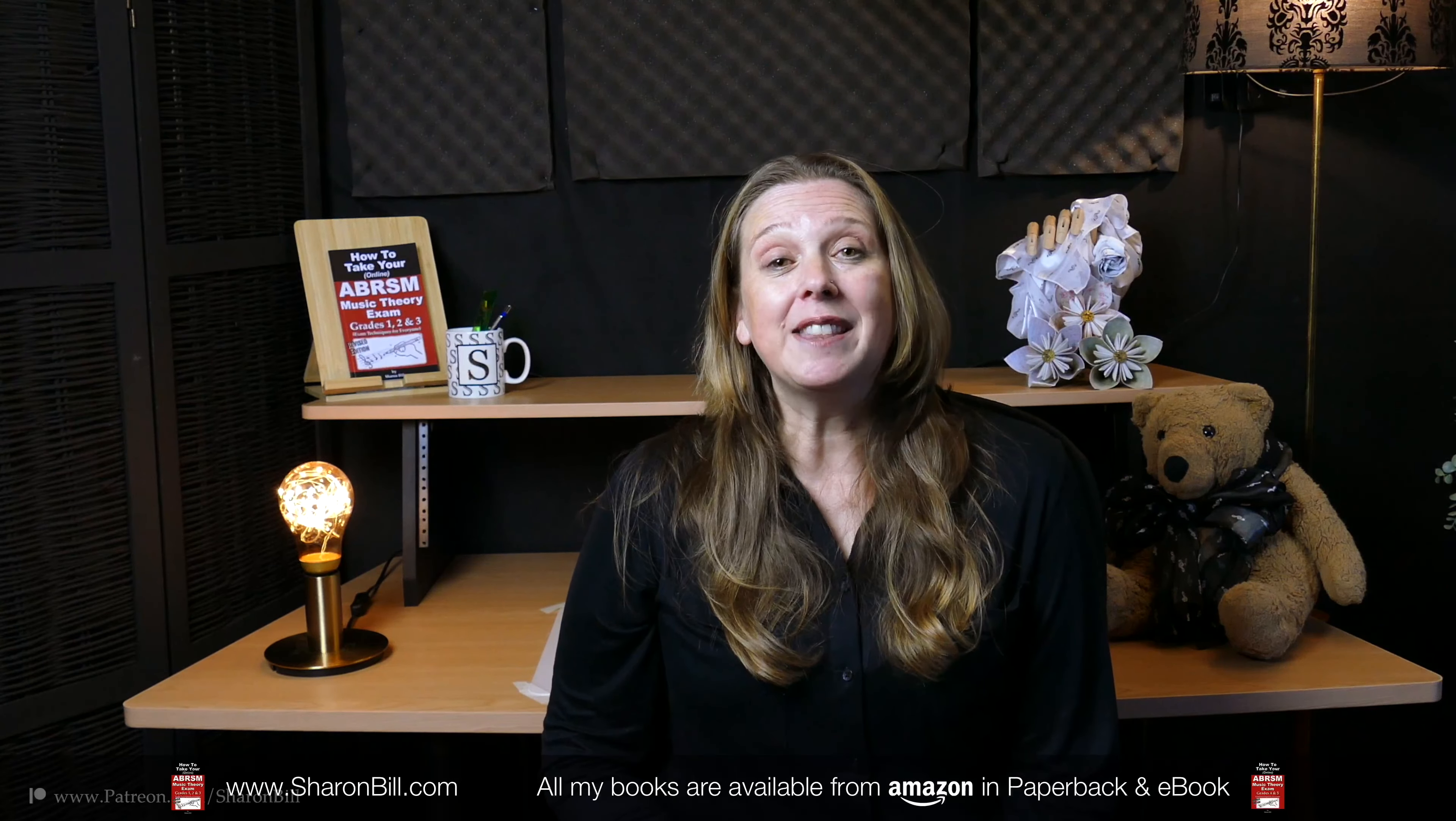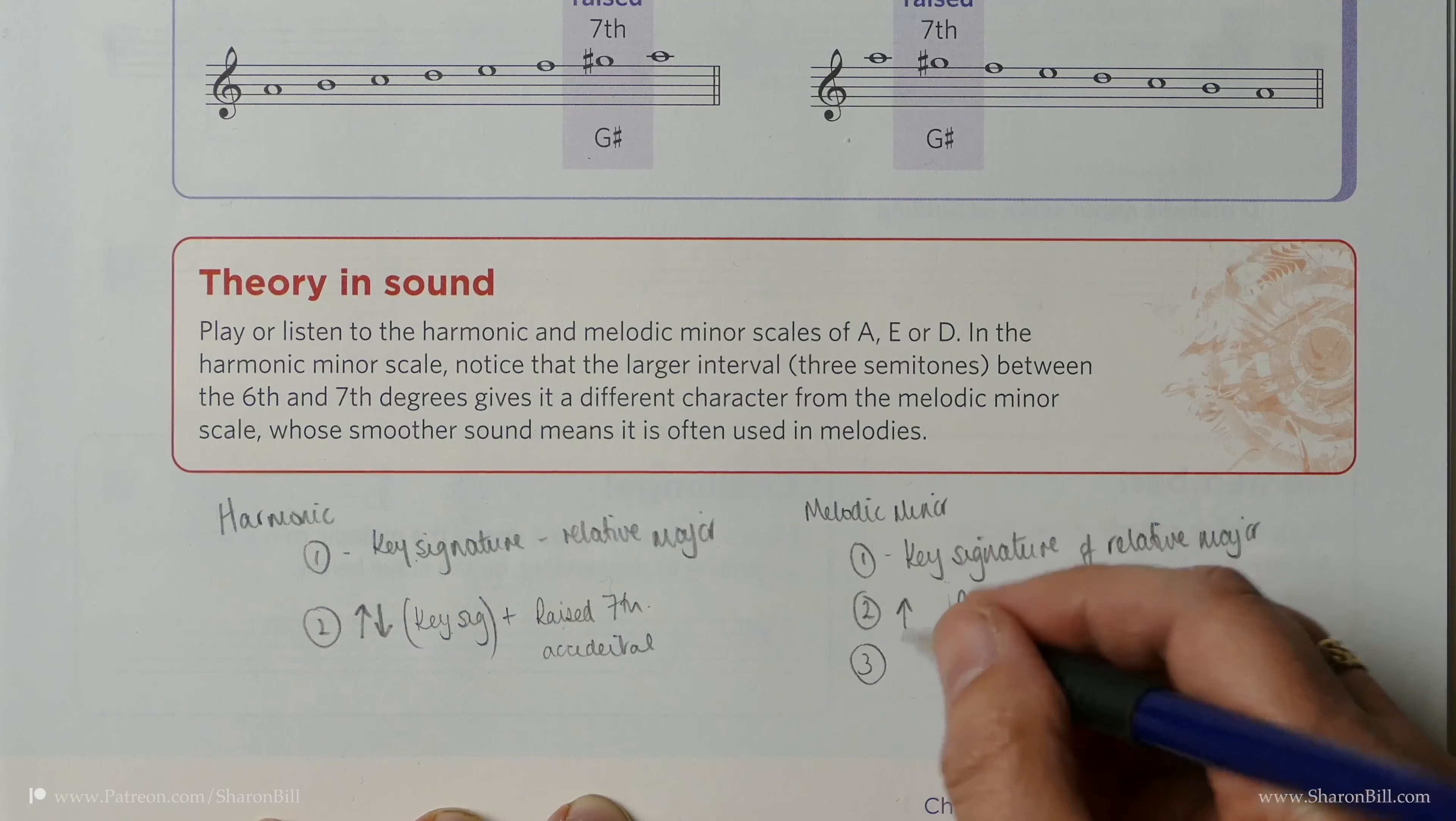Stage 1 is the same: we need the key signature of the relative major. And then Stage 2 is ascending. In addition to this key signature, we have to raise the sixth and the seventh. That's ascending.